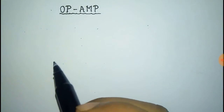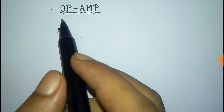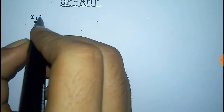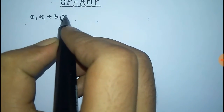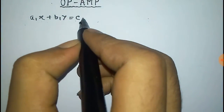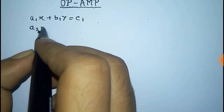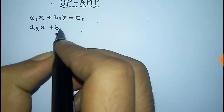We have to solve linear equations with the help of an op-amp or operational amplifier. For this we take two equations: a1x + b1y = c1 and a2x + b2y = c2, where a, b, c are the constants.